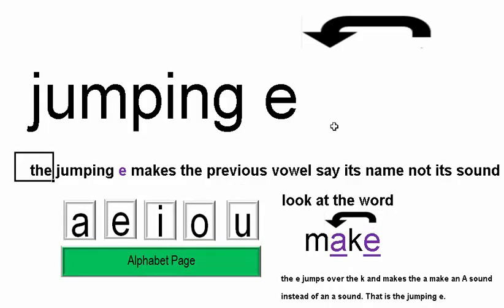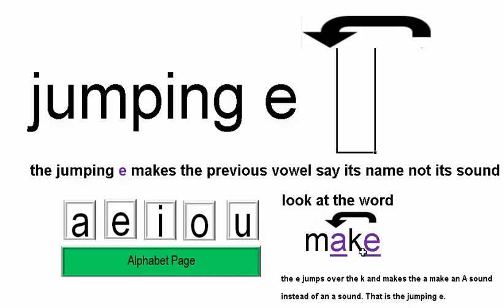JUMPING E — the jumping E makes the previous vowel say its name, not its sound. Look at the word MAKE. Without the E, that would be MAC. But with the E, that makes the A say its name — A, not its sound. The E jumps over the K and makes the A say A instead of the short A sound. That is the jumping E.